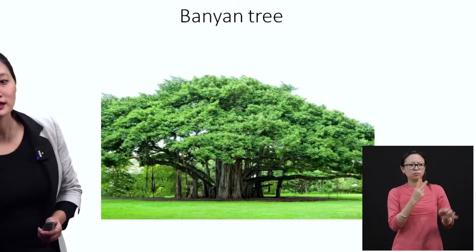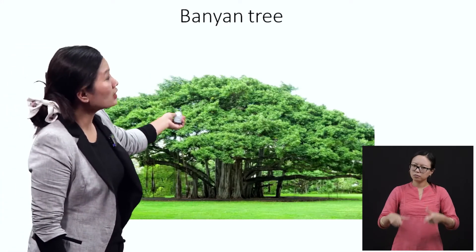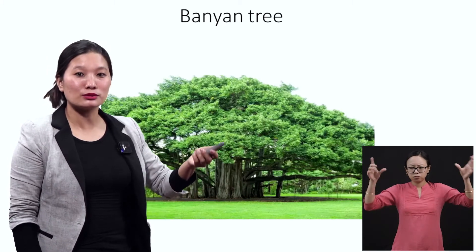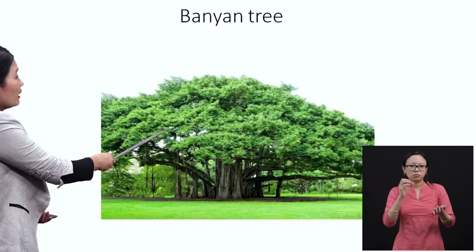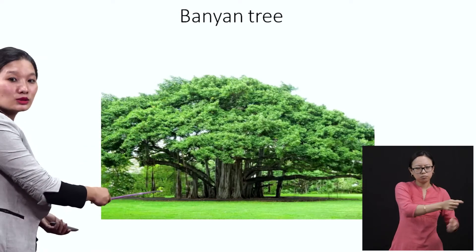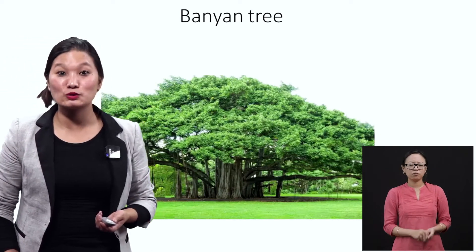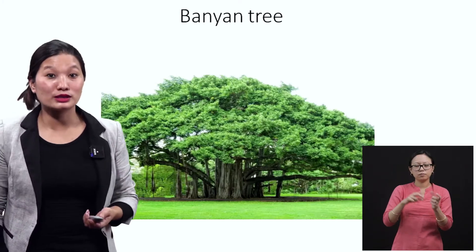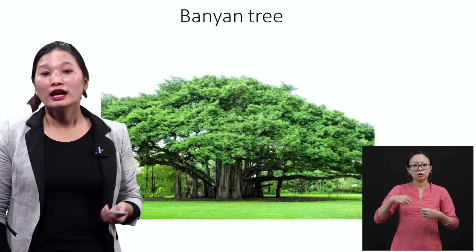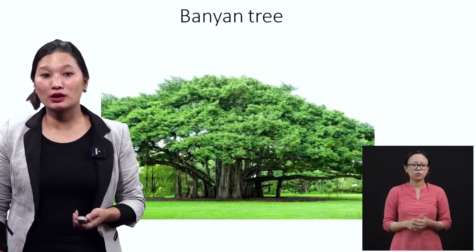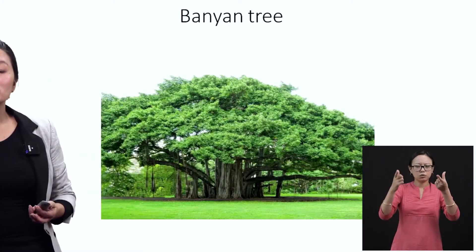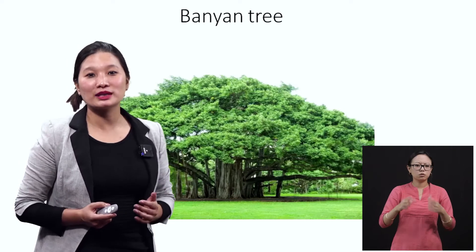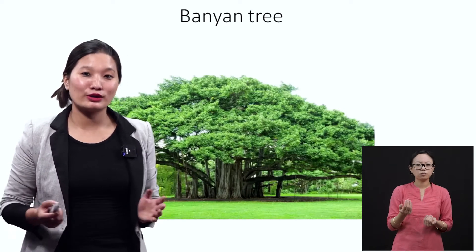This is a banyan tree — you can see it in the picture. The special thing about a banyan tree is that it can sprout new branches, and from those branches roots will hang down. When those roots touch the ground, new banyan plants will sprout. A single banyan tree can turn into a forest — that is why a banyan is considered a tree that can become a forest on its own.